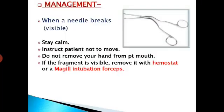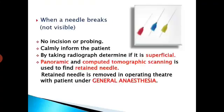There are two radiographs showing broken needles — the first shows a bent needle and the second shows a broken dental needle in the pterygomandibular space. Management: when a needle breaks and it is visible, stay calm, instruct the patient not to move, and do not remove your hand from the patient's mouth. If the fragment is visible, remove it with a hemostat or Magill's intubation forceps. When a needle breaks and it is not visible, do not make any incision or probe. Calmly inform the patient; use panoramic and computed tomographic scanning to locate the broken needle. The broken needle is removed in the operating theatre with the patient under general anesthesia.